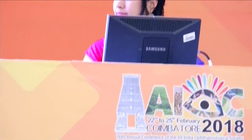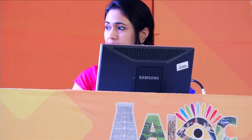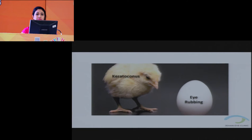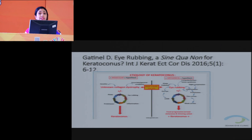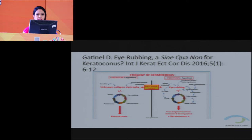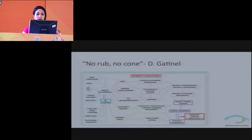Dr. Karishma Wadiap speaks on keratoconus and eye rubbing. Dr. Damiel Gatinell believes eye rubbing is a sine qua non for keratoconus — his mechanical hypothesis versus the previous molecular/unknown collagen dystrophy hypothesis. He states: 'No rub, no cone.' He correlates eye rubbing with the dominant hand, sleep side, dry eye, and allergy.